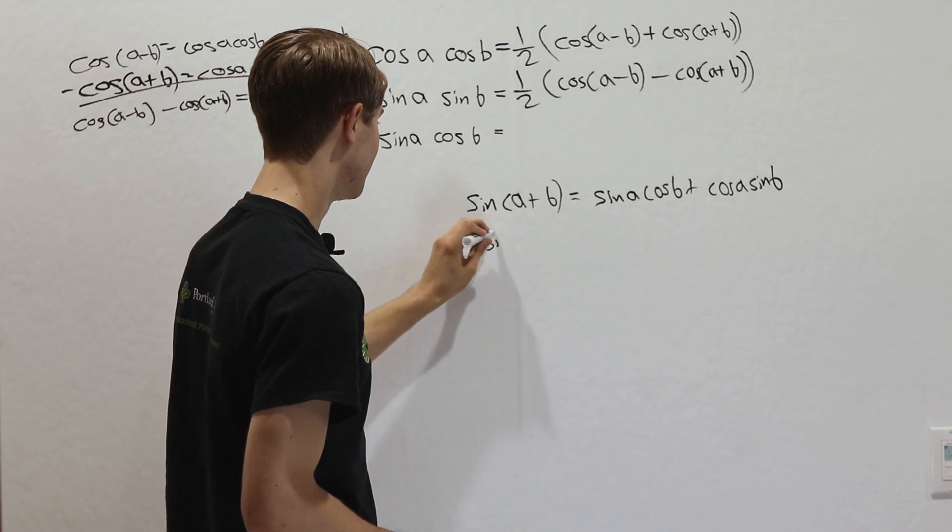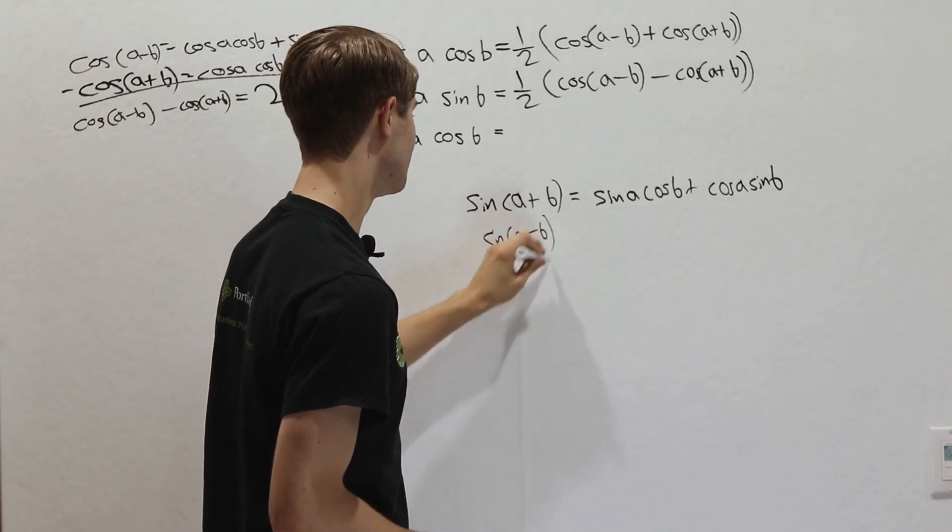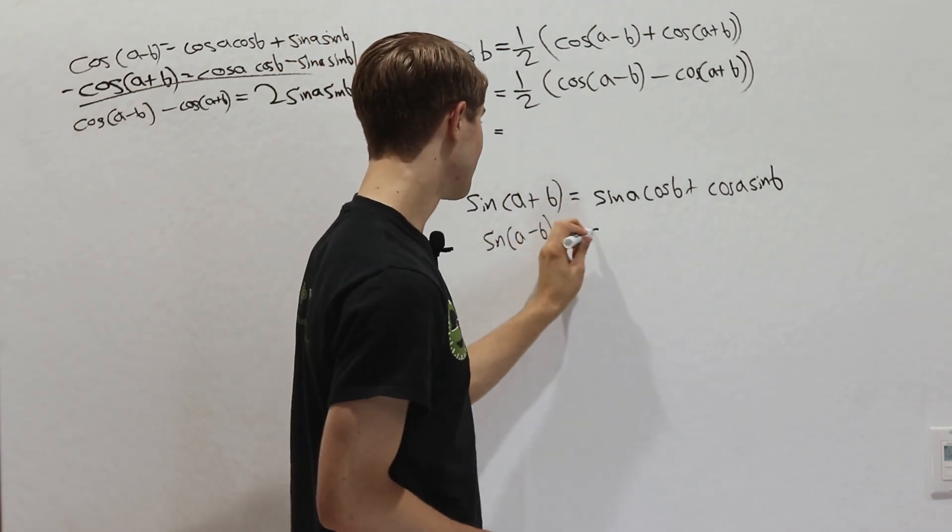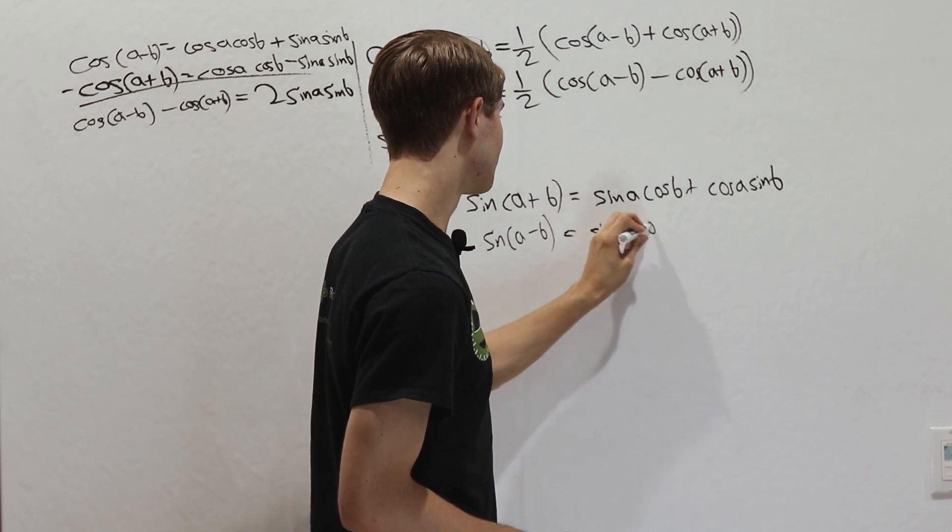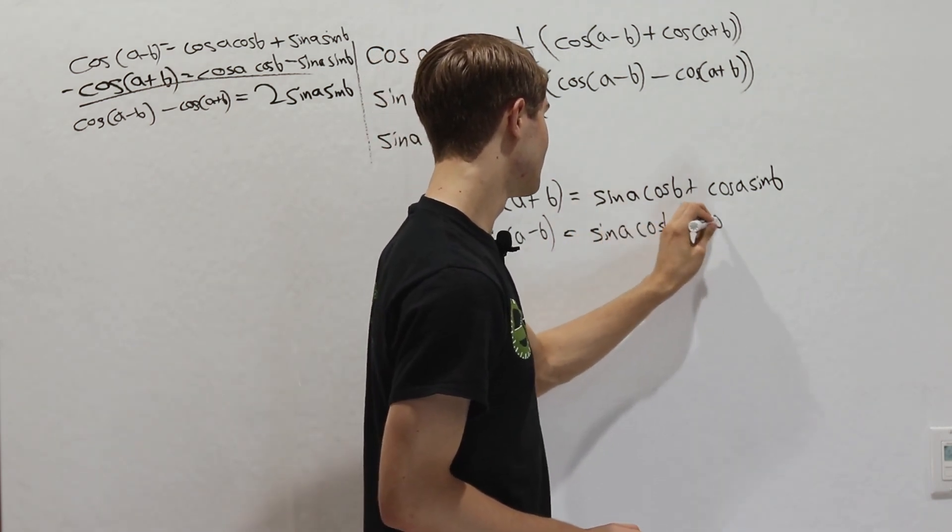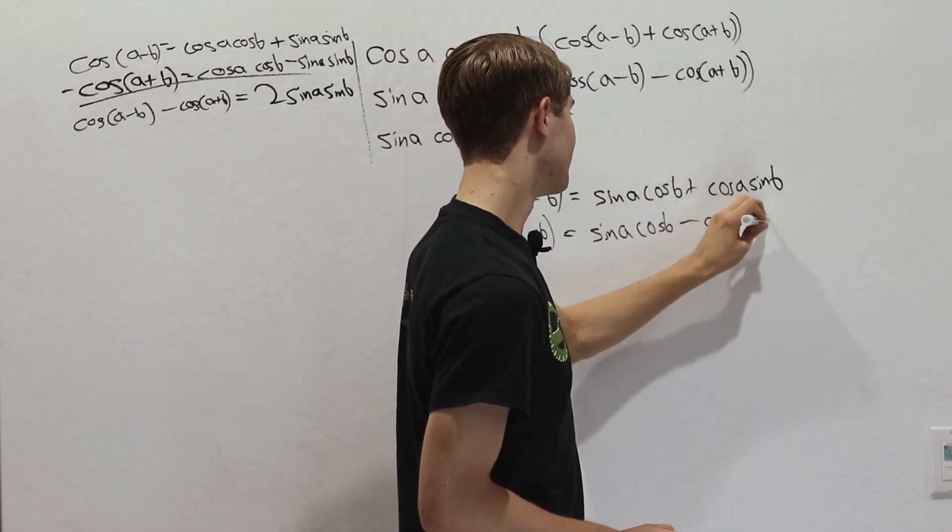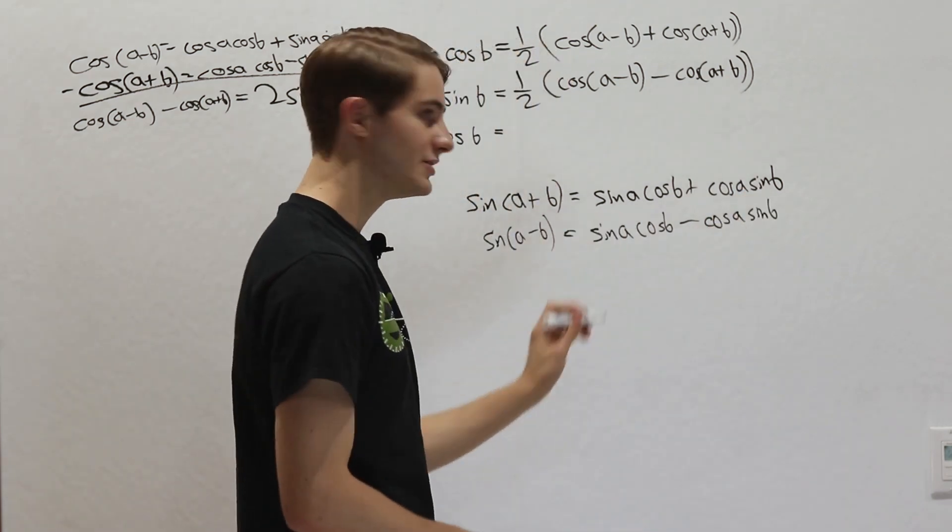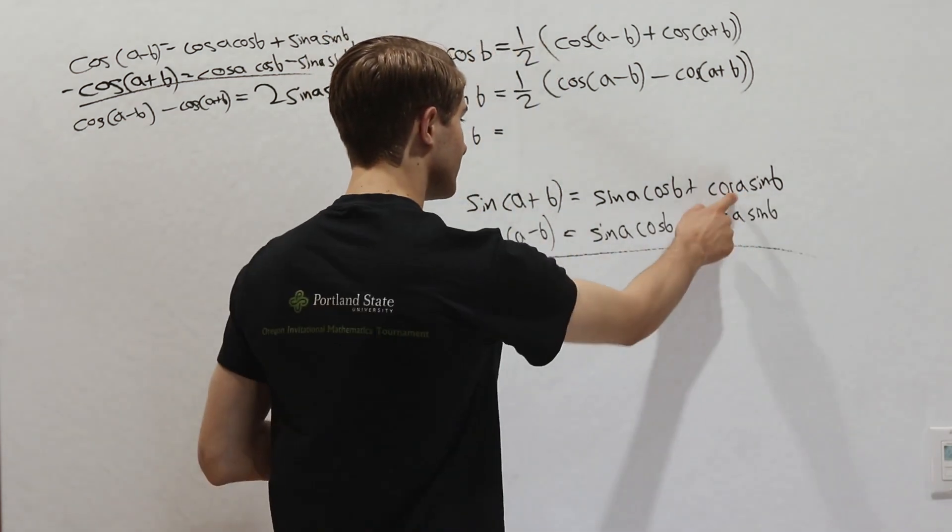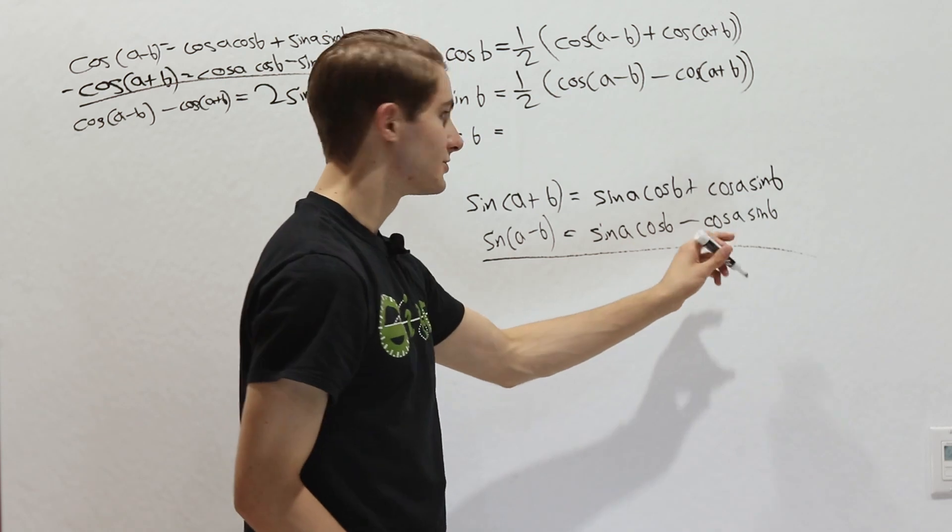Then if we do sine of a minus b, just like we did with the cosine, we'll get sine a cosine b like before, and then minus cosine a sine b. So again, we add these two equations up, these cosine a sine b terms are going to cancel out,